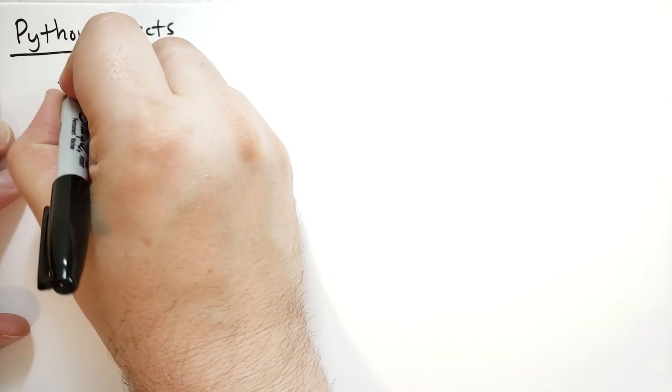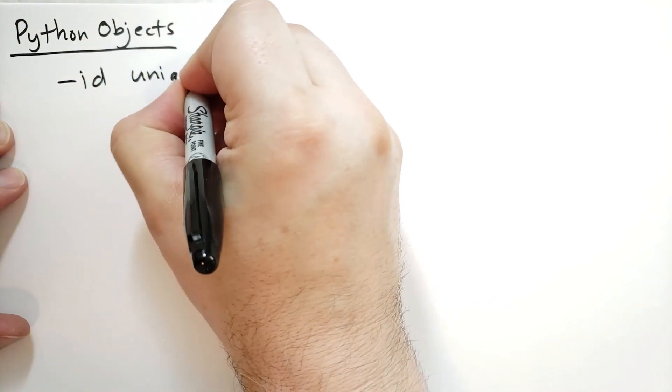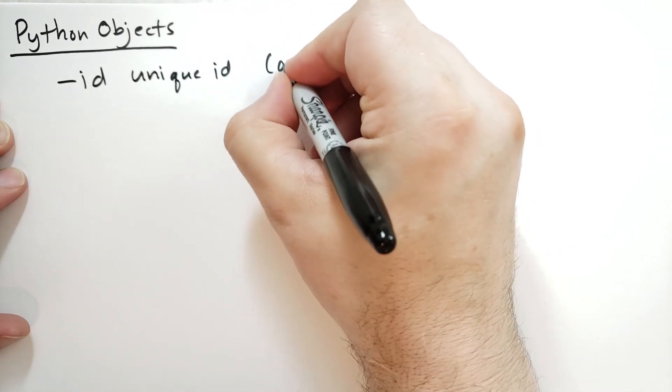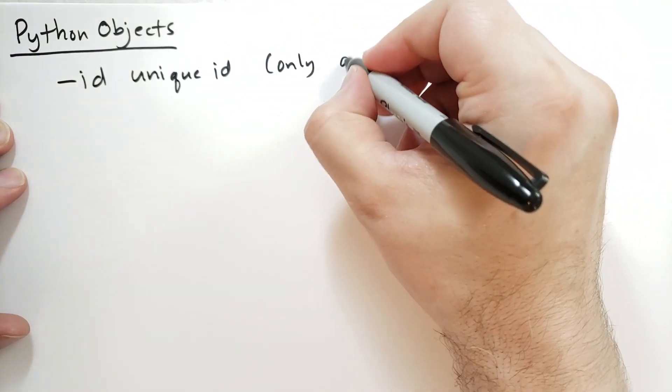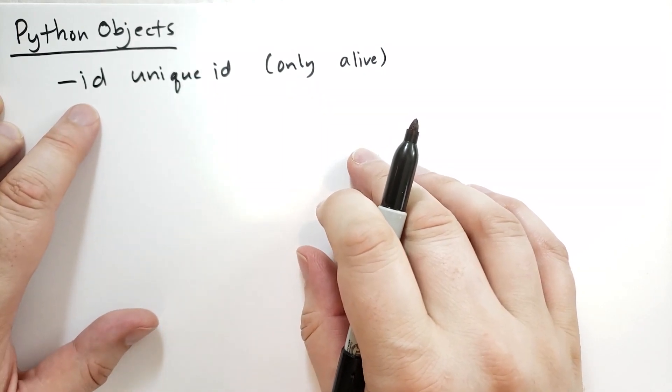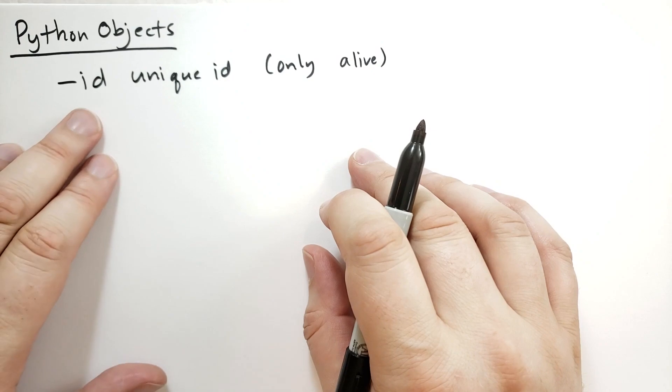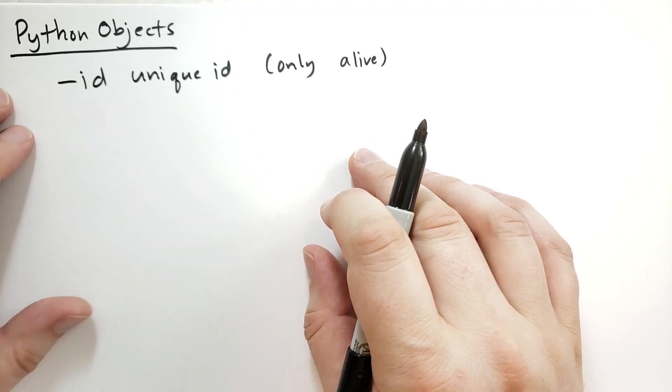So in Python every object has an ID and this is a unique ID but it's only unique as the object is alive. So Python will reuse the ID, so you can't rely on the ID being unique across the life cycle of a program. It's only unique as long as that object is alive.